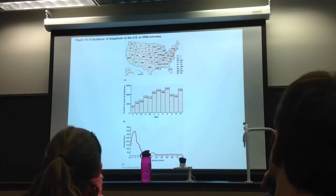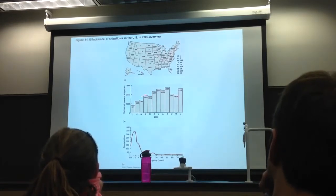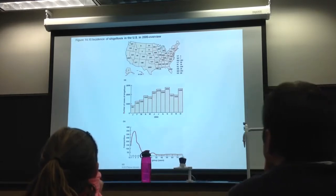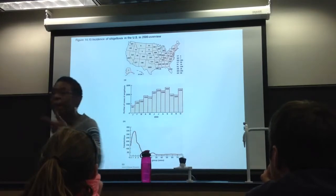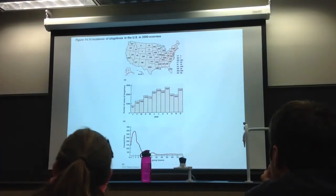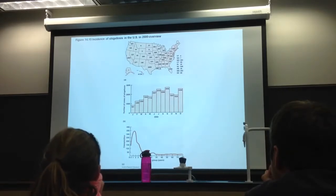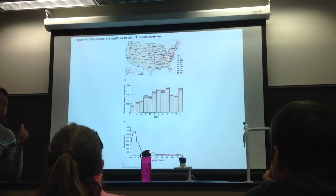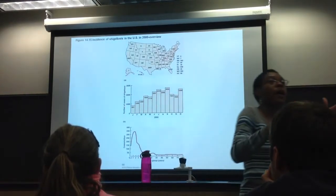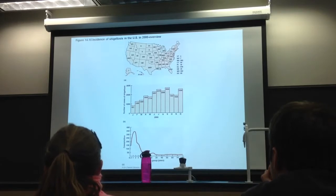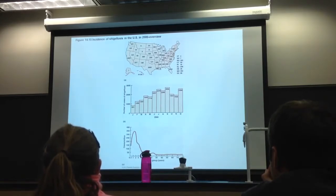Multiple ways to show data: a map, a bar graph, a line graph. The more ways you display data, the more likely you can see a pattern, and seeing a pattern gets you closer to your answer. Epidemiologists are detectives looking for clues in data to figure out the cause or origin of a disease.